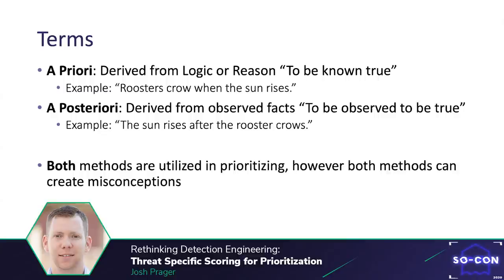An a priori misconception would be: roosters crow when the sun rises. Because we don't have evidence on every single rooster crowing, our misconception could be that if there isn't a sun, the rooster won't crow. For our a posteriori, which is completely based on facts with no logic or reason added, misconceptions can also be created. The example — the sun rises after the rooster crows — could lead us to conclude that the sun rises because the rooster crows. We would need to add logic to know that the world revolves around the sun.